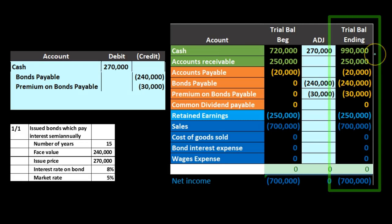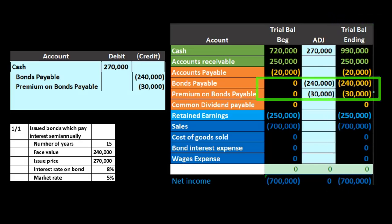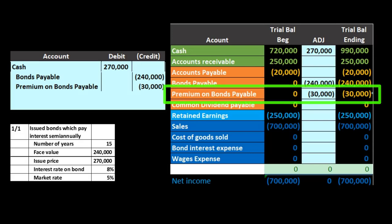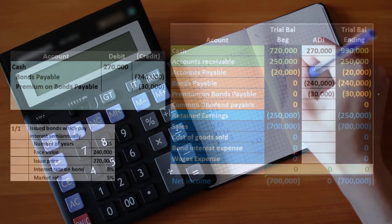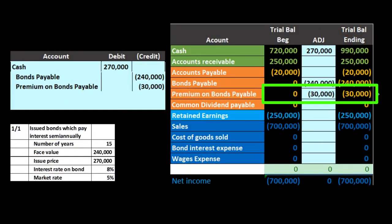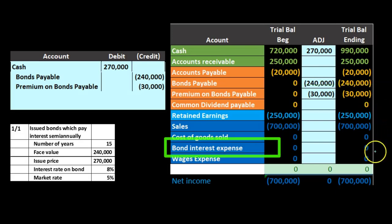So we got cash, we owe back $240,000 at maturity, and we have this $30,000 premium. The carrying value of the bond — adding those together — adds up to $270,000. The question is: what do we do with this premium? It has to go away by the end of the period, and we're not going to pay it out — we only pay $240,000. So as we make interest payments, we'll reduce this premium periodically. We'll debit the premium to reduce it and credit interest expense, which is unusual since interest expense typically only goes up.